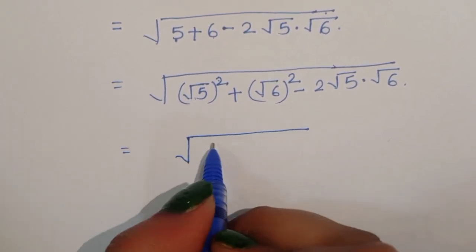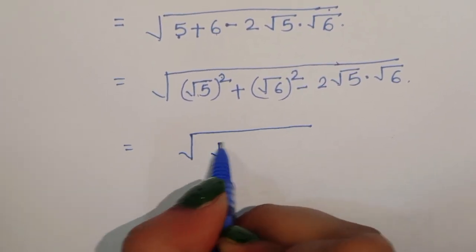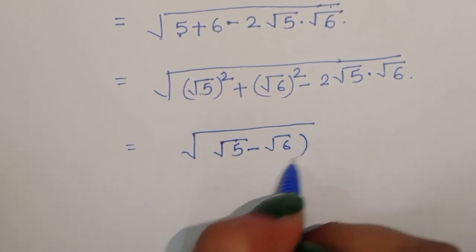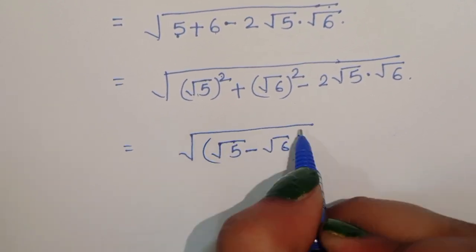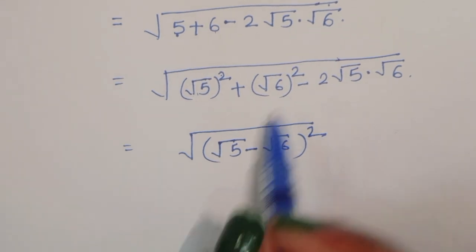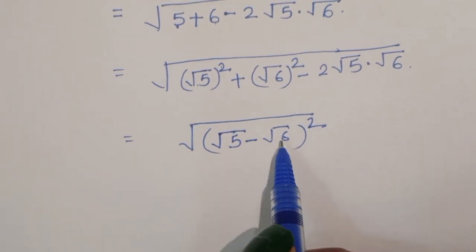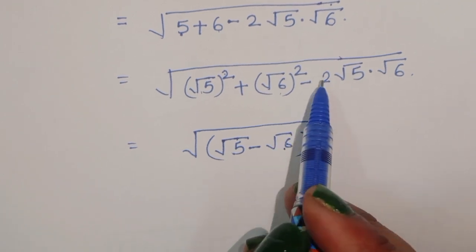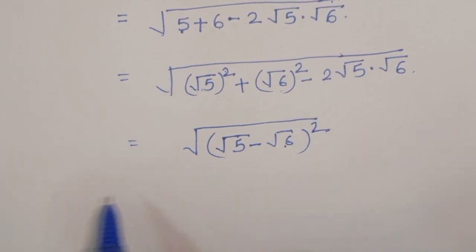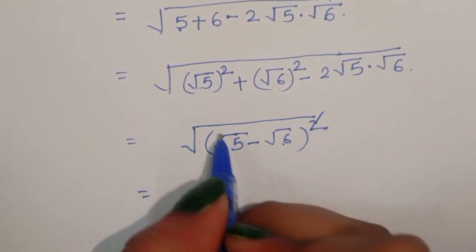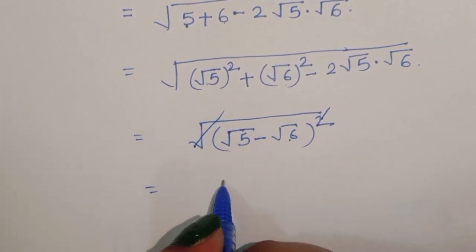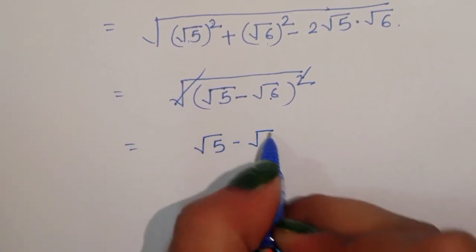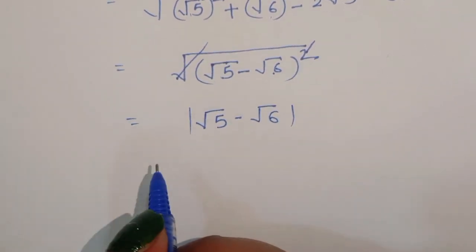So we can write this as √(√5 - √6)². The formula a² + b² - 2ab = (a - b)². The outer square root cancels with the square, and we get |√5 - √6|, the absolute value.